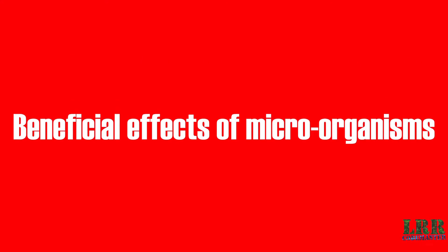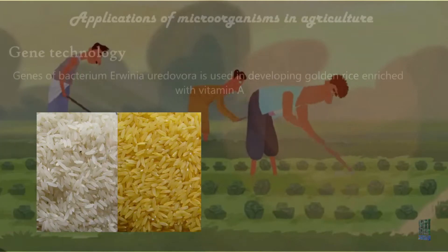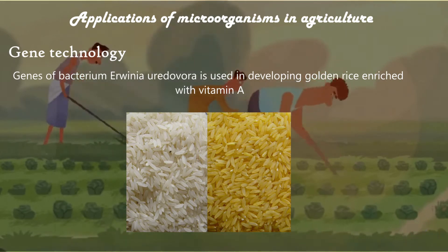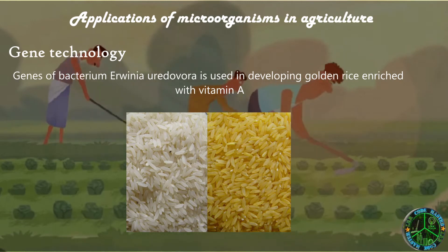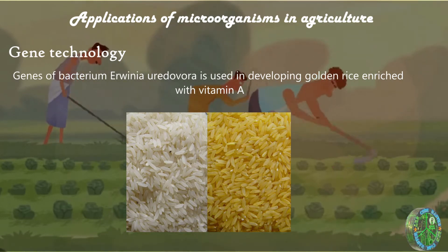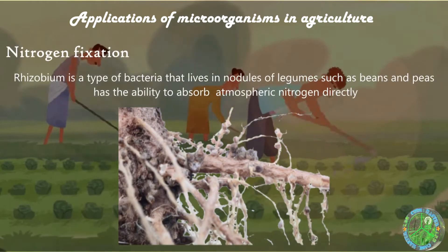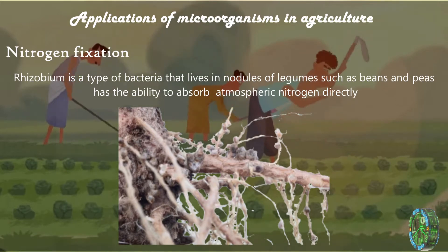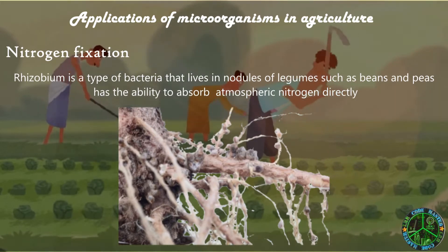Beneficial effects of microorganisms — let's see the application of microorganisms in agriculture. Gene technology: genes of the bacterium Agrobacterium are used in developing golden rice enriched with vitamin A. Nitrogen fixation: a bacteria called Rhizobium, which lives in nodules of legumes, helps to absorb atmospheric nitrogen directly.